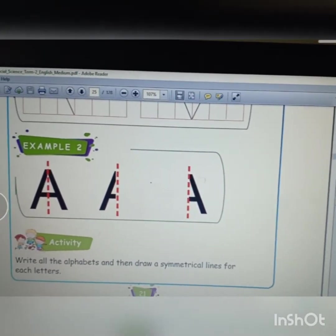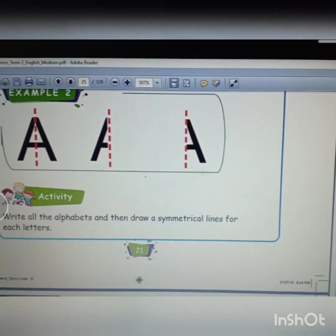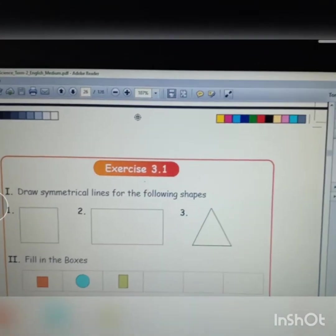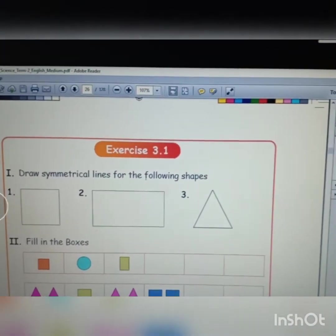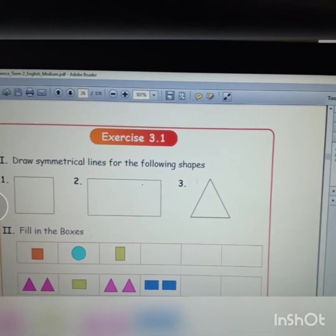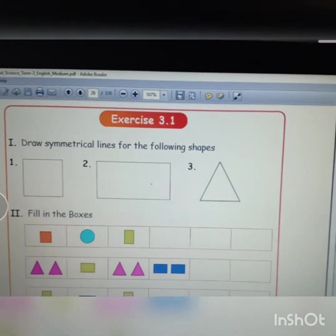Write all the alphabeticals and draw the symmetrical lines for each letter. In this way, all the alphabets, you can draw a symmetrical line. Draw symmetrical lines for the following shapes: square, rectangle, triangle. Here you can draw a symmetrical shape.